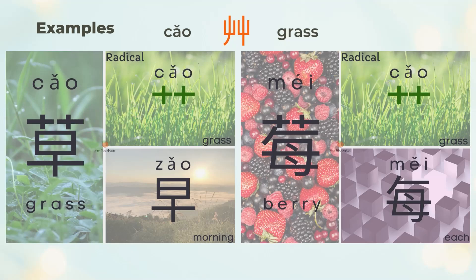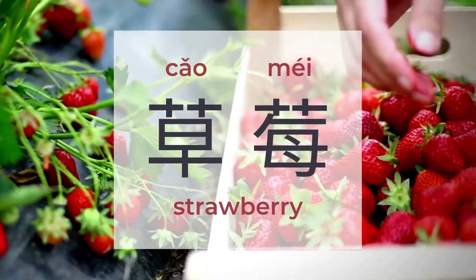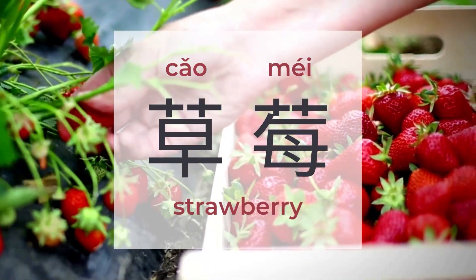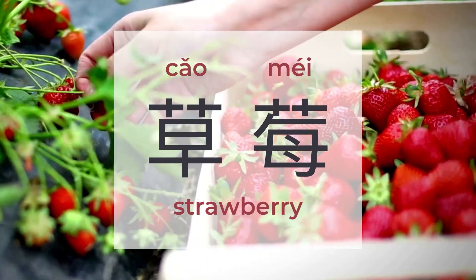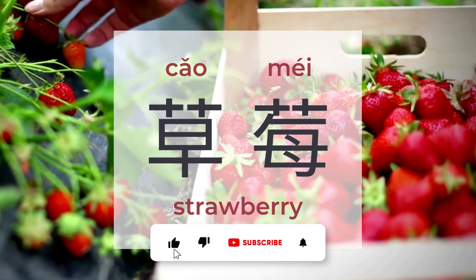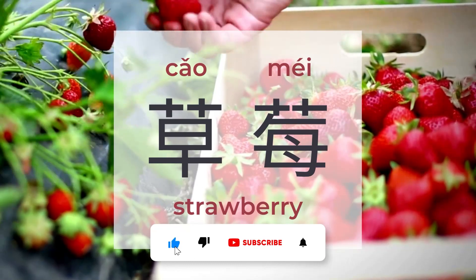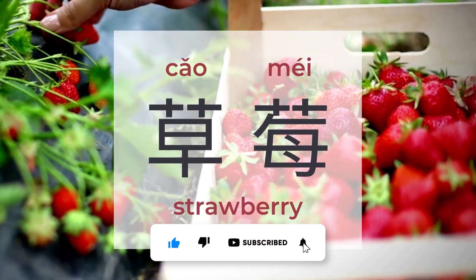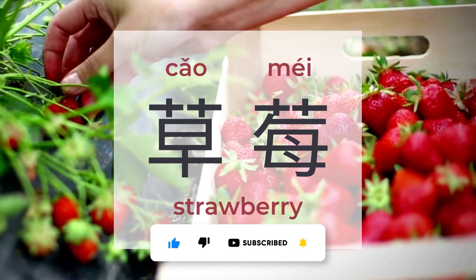莓 means berry. 莓 is the top two tiny crosses 草 (grass) and the bottom 每 (each). Combining the two characters together, 草莓 means strawberry. If you want to learn more about Chinese radicals and examples, you're welcome to subscribe to my channel and watch other videos. See you again soon, bye bye!